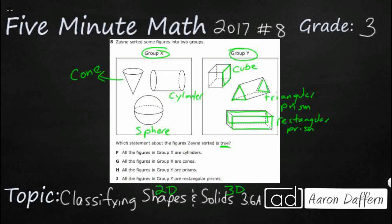All of the figures in Group X are cylinders. Well, this is a cylinder. A cylinder's got two round flat surfaces, so right here. And then it's got one big curved surface, and that's all it is right here.